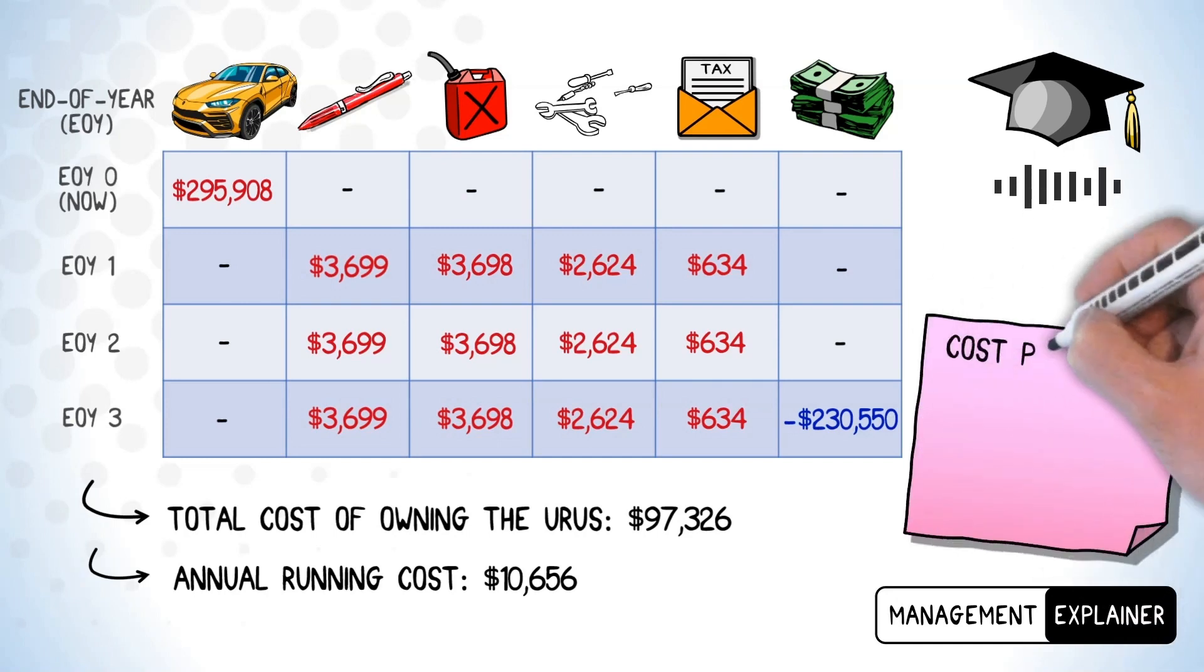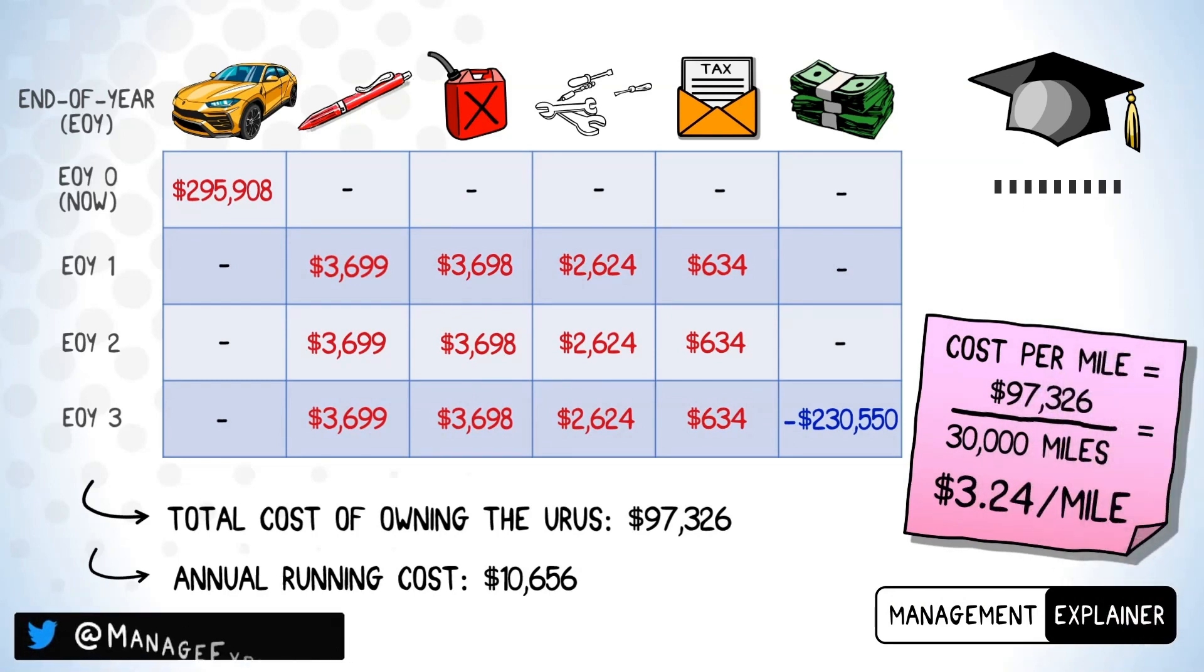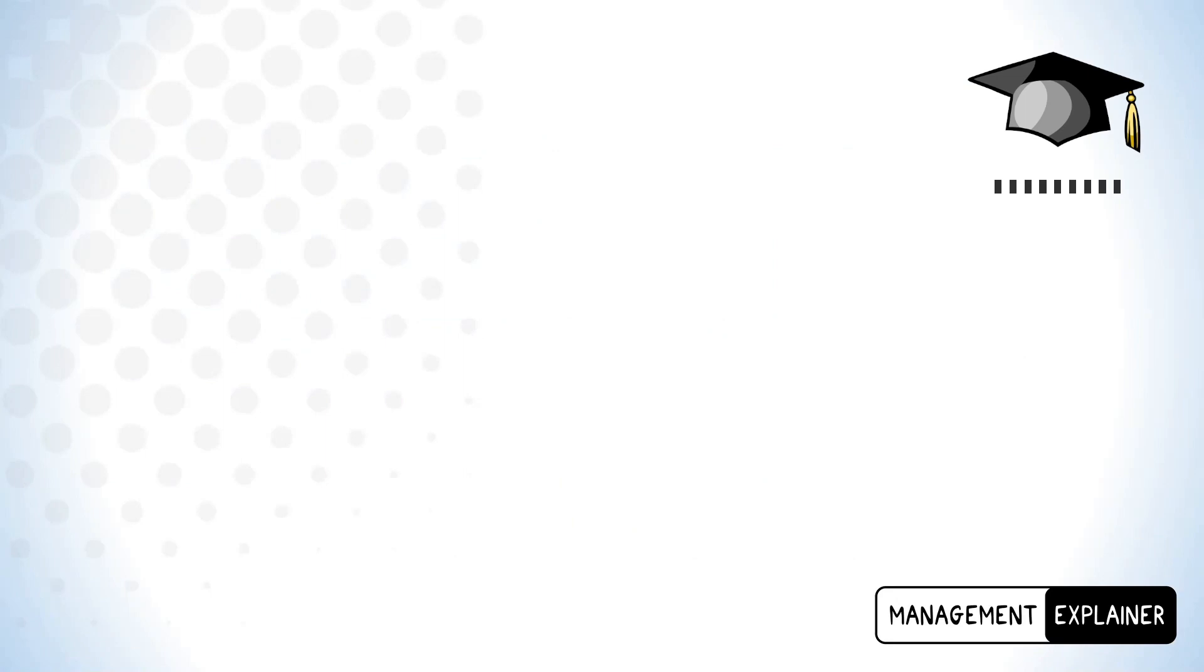If we divide our total cost over the planned mileage, that gives us our cost per mile at $3.24. So there we have it: the total cost of driving a Lamborghini Urus is $3.24 per mile according to our model.